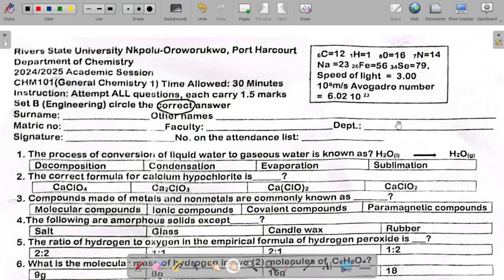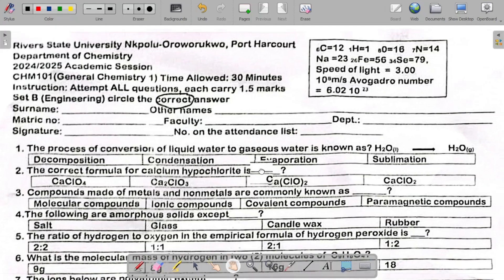In this video, we'll be looking at the solution to the 2024/2025 general chemistry test questions. We'll take each of the questions and then provide the solution. The instruction here says attempt all questions and circle the correct answer. So we're going to be circling the answer from the instruction.